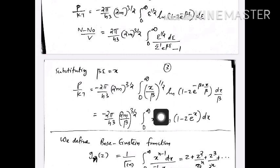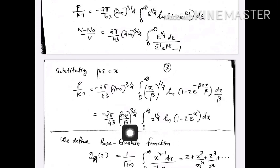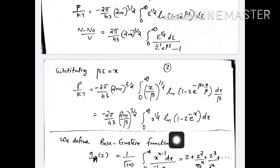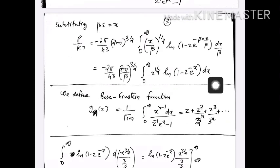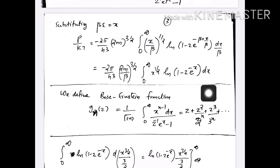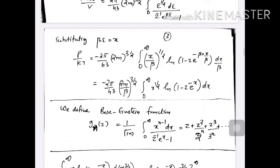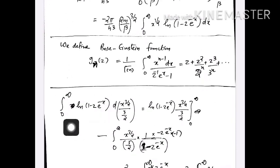After the substitution β·ε = x, equation 5 transforms to: p/kT = minus (2π/h³)·(2m/β)^(3/2) times the integral from 0 to infinity of x^(1/2) log(1 minus z·e^(−x)) dx. We have now transformed the integration variable from ε to x, and we proceed to evaluate this integral.